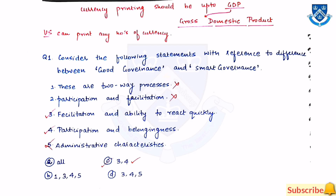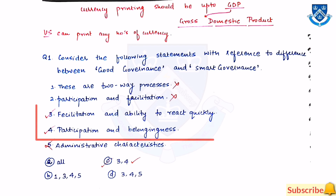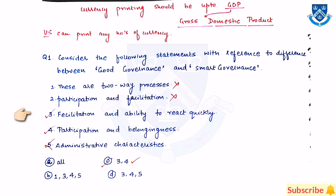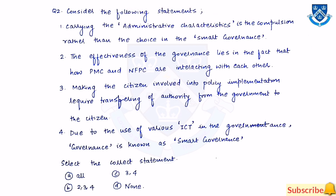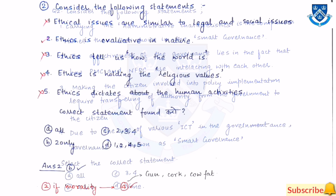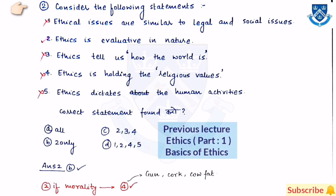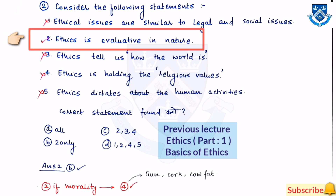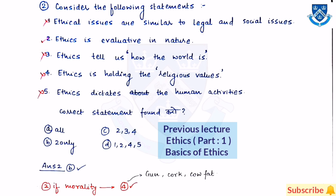Two practice questions: First, with reference to the difference between good governance and smart governance — the answer relates to facilitation and ability to react quickly, as well as participation and belongingness. Second, consider the following statements — all given options are correct. A question from the previous part: ethics is evaluative in nature.